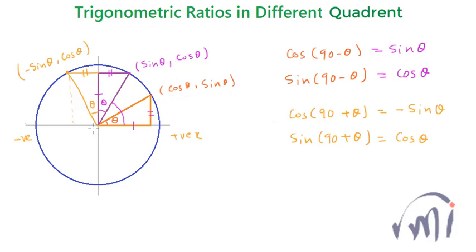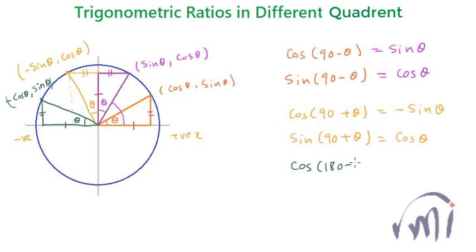Now if I talk about 180 minus theta, this will be a triangle where this angle is theta, and this triangle will also be congruent to the original triangle. The coordinates of this point: the length on the x-axis is the same as cos theta but it is on the negative x-axis, so this will be minus cos theta, and the y coordinate equals sin theta, which is on the positive y-axis so it remains positive. So cos(180 minus theta) equals minus cos theta, and sin(180 minus theta) equals sin theta.